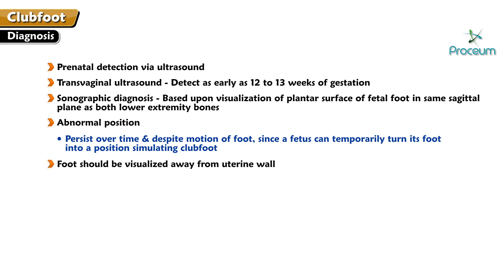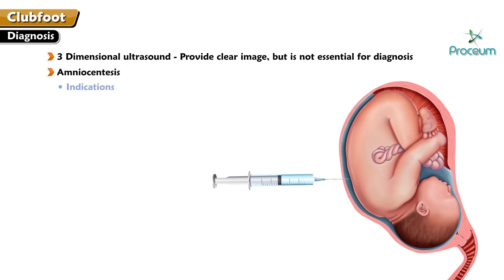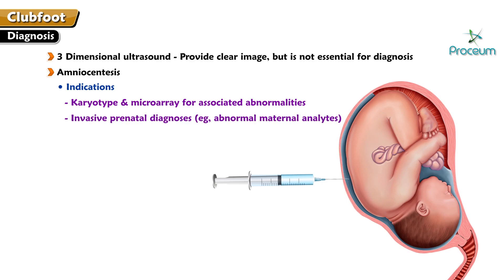In addition, the foot should be visualized away from the uterine wall. Three-dimensional ultrasound, if available, can provide a clearer image but is not essential for diagnosis. The latest guidelines suggest amniocentesis for karyotype and microarray if there are associated abnormalities or indications for invasive prenatal diagnosis, like an abnormal maternal analyte, given the increased risk of aneuploidy. Clinicians may also perform amniocentesis in the setting of isolated clubfoot because associated abnormalities may not be detected by ultrasound, and small numbers of karyotypic results limit the reliability of published estimates of risk.